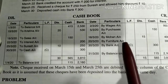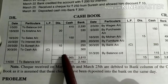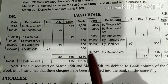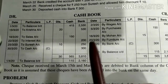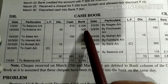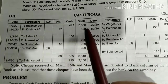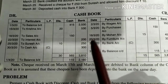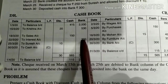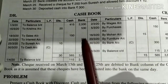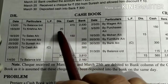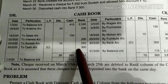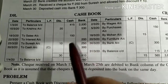That was the complete triple column cashbook and how to maintain it. I have told you that if there is a contra entry, you need to be careful. Also, if you receive a check, you must observe carefully whether the check was deposited into the bank on the same date or not. If deposited on the same date, it goes to the bank receipt side. If the check was not deposited into the bank on the same date, then that transaction entry will NOT be recorded in the cashbook, because on that day we receive 'check in hand,' and since there is no check in hand column, no entry is made. That's all, thank you.